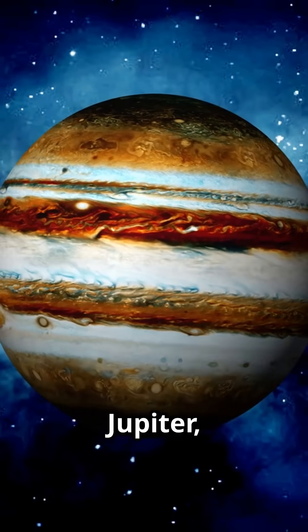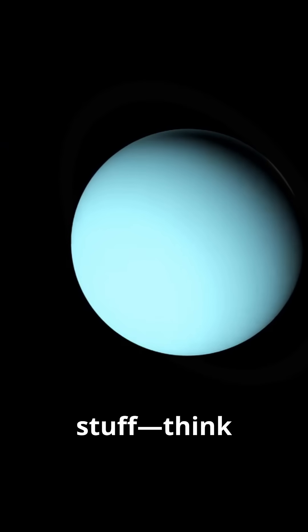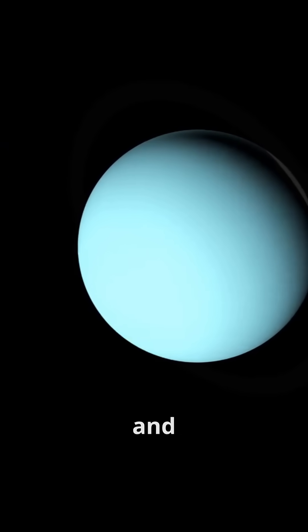Unlike gas giants like Jupiter, ice giants are built from heavier stuff. Think oxygen, carbon, and even sulfur.